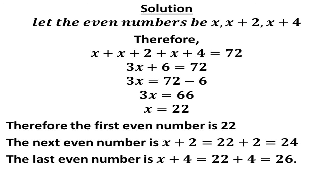So if you add all the even numbers we have got together, 22 plus 24 plus 26, it should give us 72, which is correct. So that is the solution to that question.